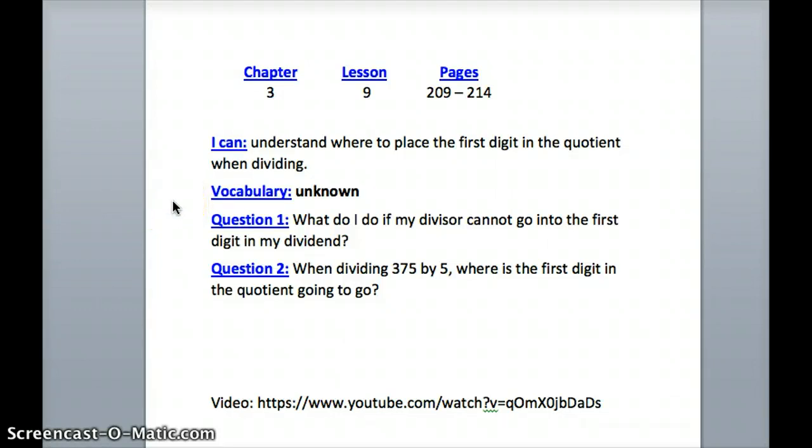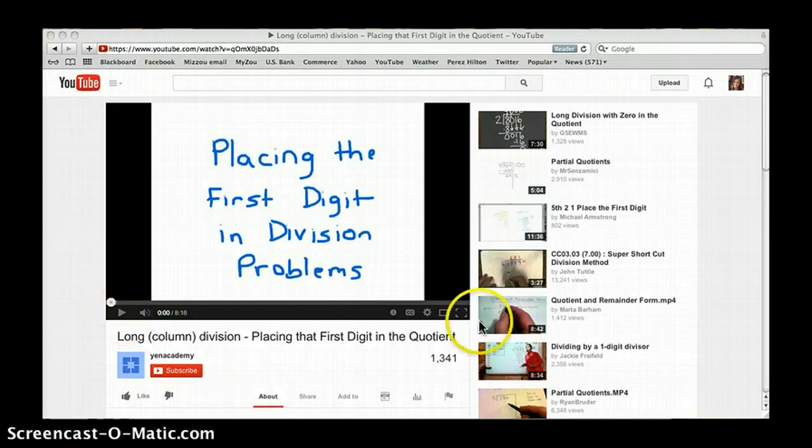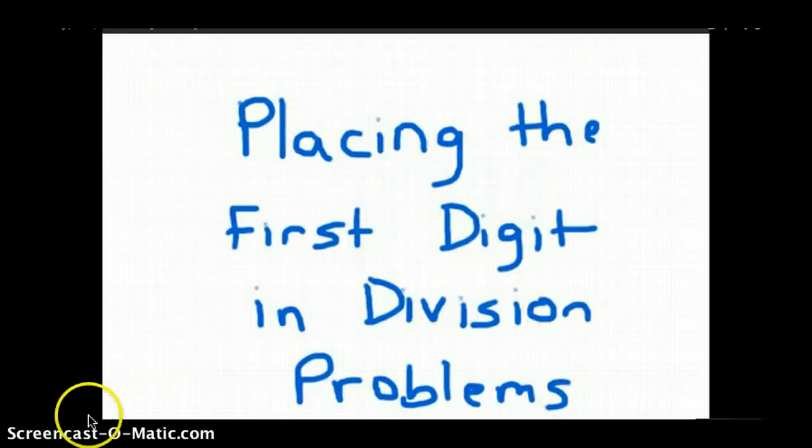Question 1: What do I do if my divisor cannot go into the first digit in my dividend? Question 2: When dividing 375 by 5, where is the first digit in the quotient going to go? Let's watch this video to walk us through these steps.